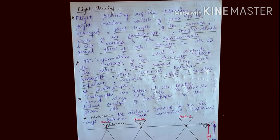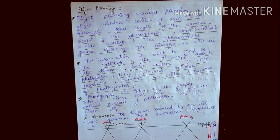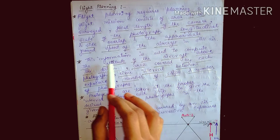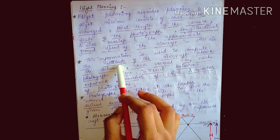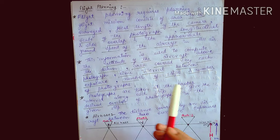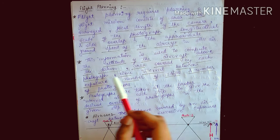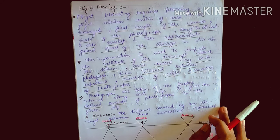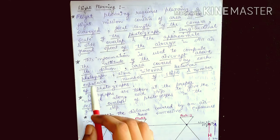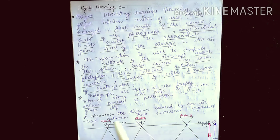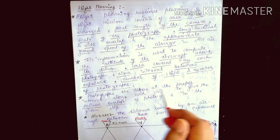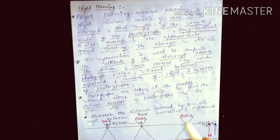This information also includes longitudinal and side overlap, and the approximate ground speed of the aircraft. This information is used to compute the altitude of the aircraft above the datum (MSL), the area covered by each photograph, the time interval between exposures, and the number of strips and number of photographs required to cover a particular area.